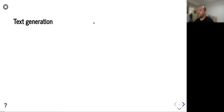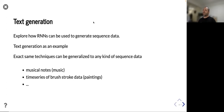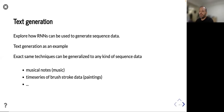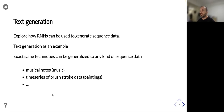We explore how RNNs can be used to generate sequences of data. Text generation is only one case — the same technique can be generalized to any kind of sequence data. For example, music can be a sequence of musical notes, and a painting can be treated as a time series of brush strokes.